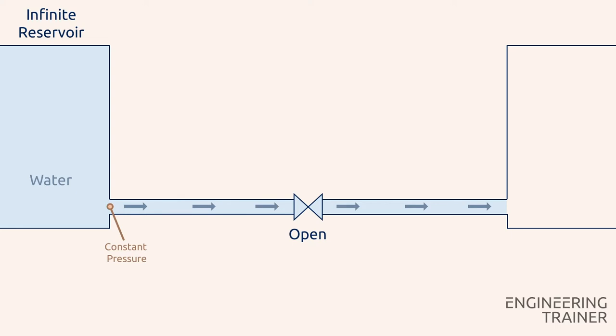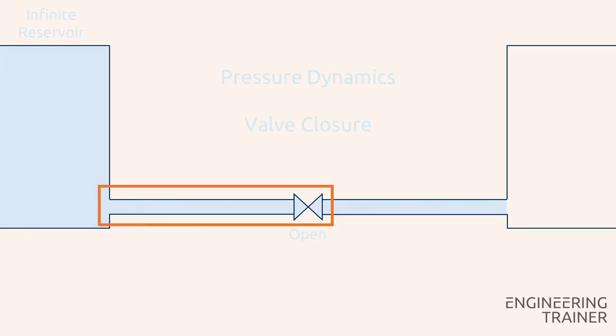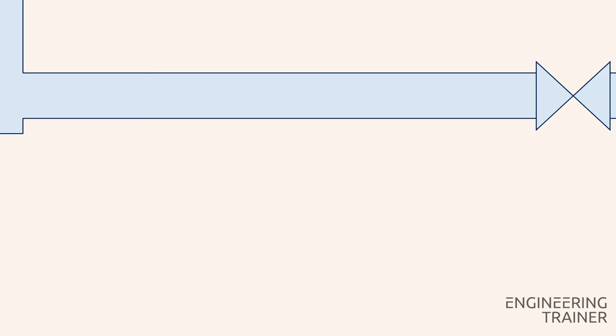We will now investigate the pressure dynamics for a valve closure scenario. For now we focus on the pipe section upstream of the valve. Again we see the pipe section with the valve which is open and the presence of a constant pressure at the inlet.